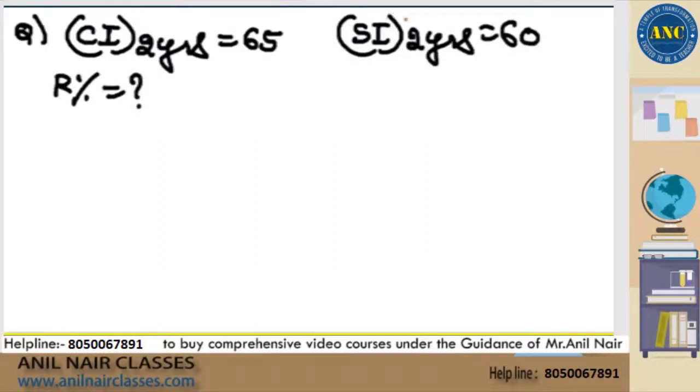CI for two years is 65. SI for two years is 60. R percentage. Absolute sitter. 5 seconds it will take.